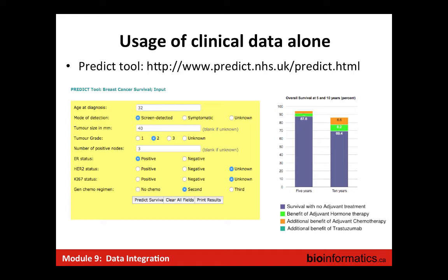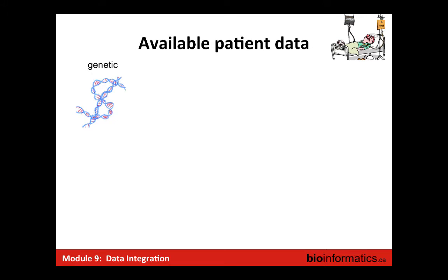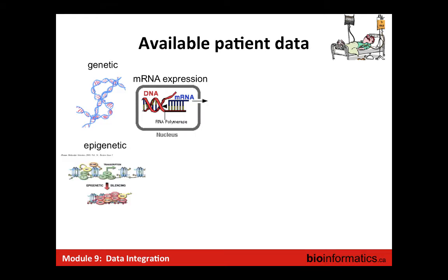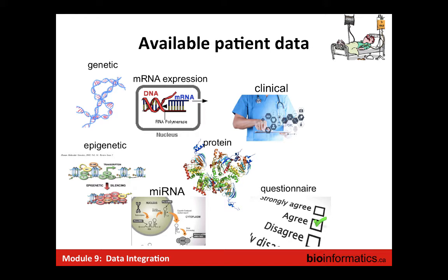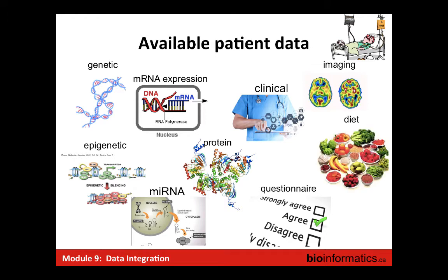Predictive systems exist, and even using clinical data alone you can already build such systems. But this is just a small drop compared to all the rest of the data becoming available. In my practice as a machine learning person working at a hospital, I've seen genetic data, gene expression, epigenetic data, micro RNAs, proteins — all these layers. For neuropsychiatric diseases there's questionnaire data; there's imaging data relevant to both cancer and non-cancer diseases; and sometimes dietary data, especially for stomach cancer or inflammatory bowel diseases.